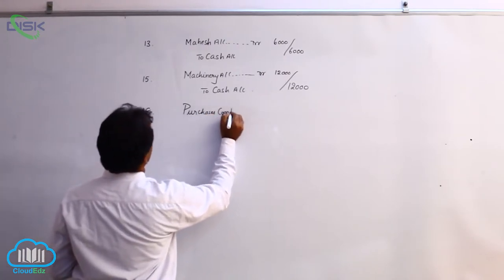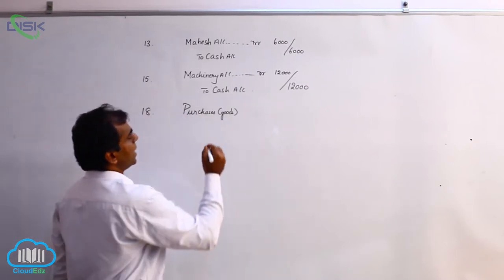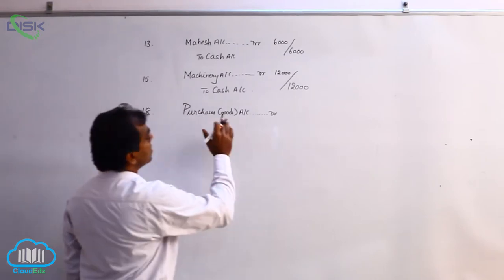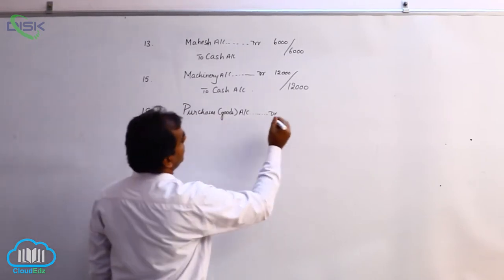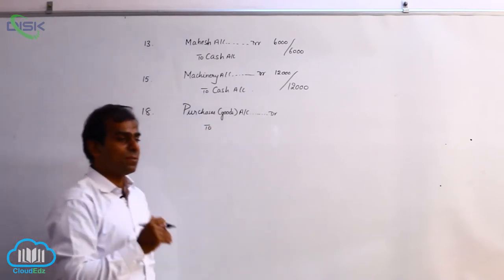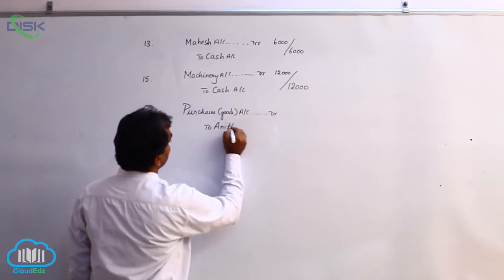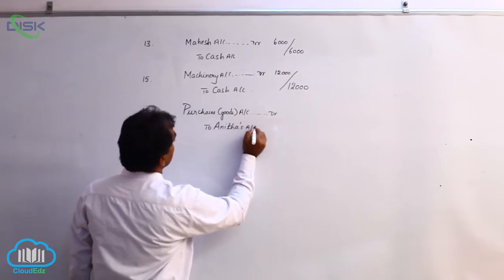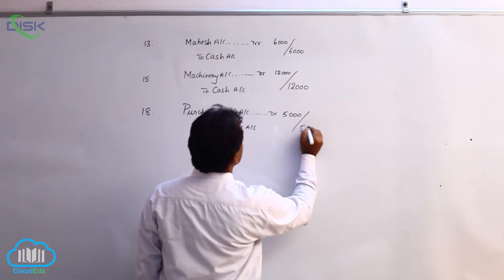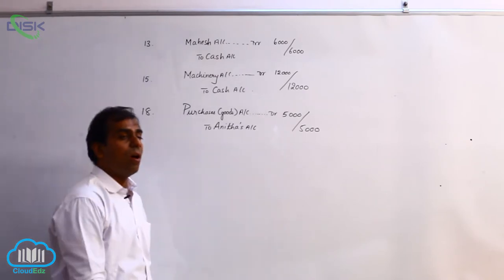We have two accounts: purchases, which is a real account (goods), and Anita. The real account rule says debit what comes in — goods are coming in, so we debit purchases. Anita is a personal account and is the giver of the goods, so we credit Anita's account. The journal entry is purchases account debit to Anita, the amount being 5000, and the narration is being goods purchased on credit.